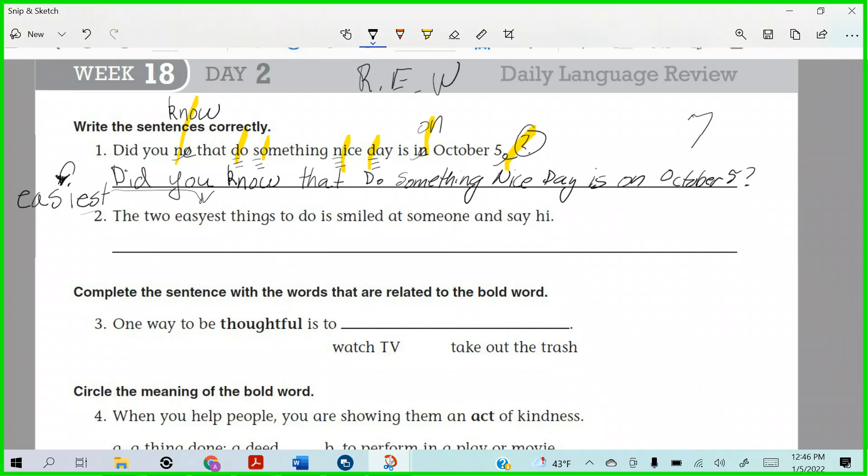The two easiest things to do is smiled at someone and say hi. Smile should just be smile, right? Well, we got one more goof up here. Do you see it? What is it? The two easiest things to do. No, it's actually a number, two things. No, that means also T-W-O is correct. We're talking about two things, right? Listen, let's read it like this. The two easiest things to do is smile at someone and say hi. What is it? It should be are.